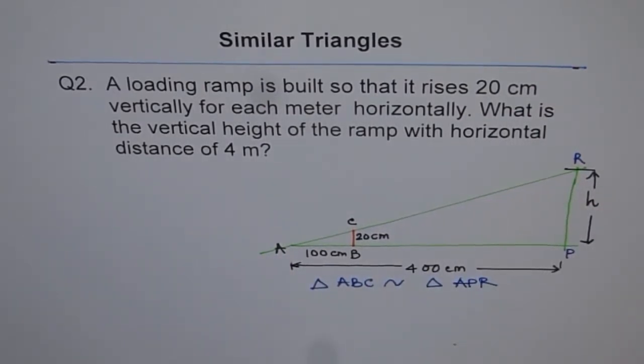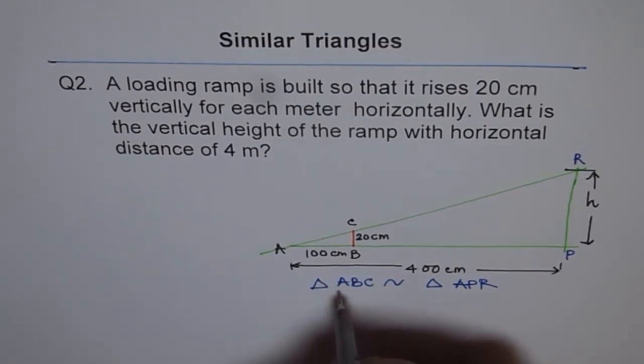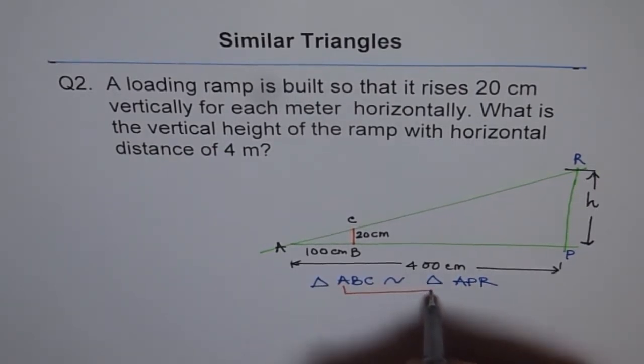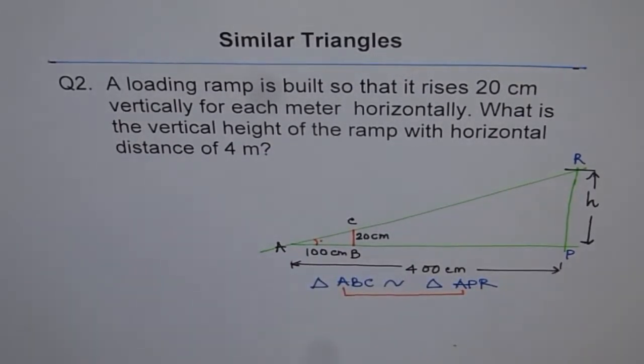Now let me tell you one more thing. Whenever we write these similar triangle relationships, we have to ensure that the order is correctly written. When we say triangle ABC is similar to triangle APR, we are saying that angle A is equal to angle A. This angle is common.